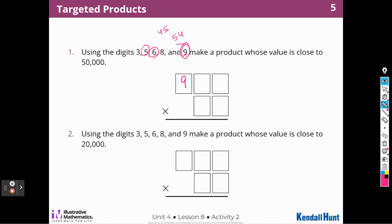What times what in here would get me close to 50,000? I know that 9 times 5 is 45, and 9 times 6 is 54. So should I use 9s? Should I use 9s and 5s? I'm trying to get close to 50,000. So I think I am. I'm going to try to 9 here and a 5 here, because that's going to get me close to it. This is going to be too much. So I just need to add some other digits to make a product that's going to be close to 50,000.